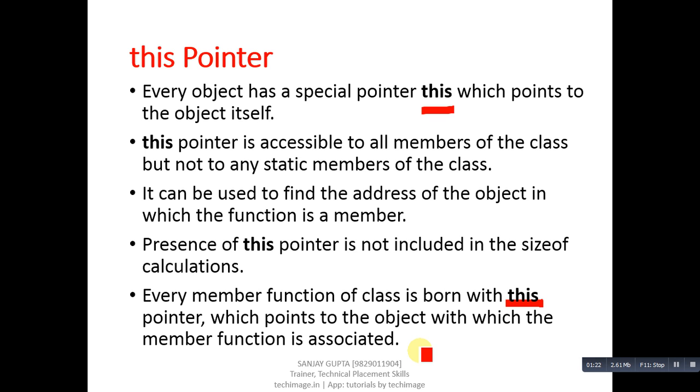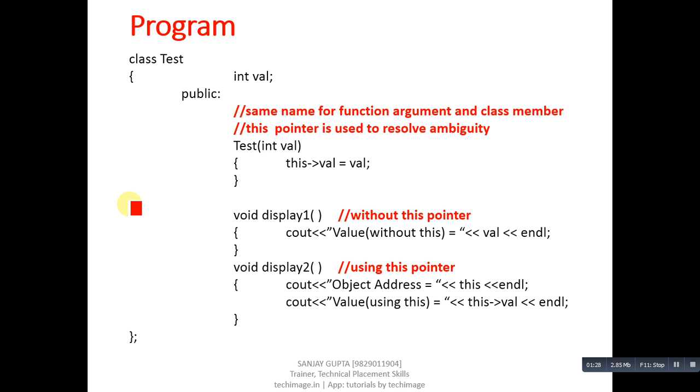So after discussion, you can understand the concept with the help of an example. In this example, a class Test is defined. Here an attribute is declared whose name is val. Then in the public section, a constructor is defined. It is a parameterized constructor which is receiving a parameter in val.